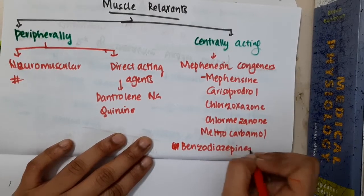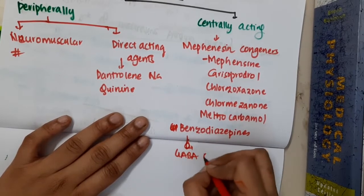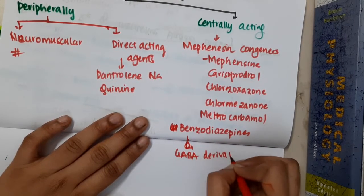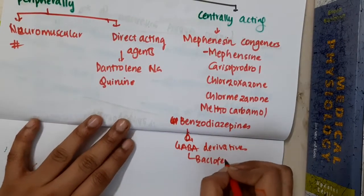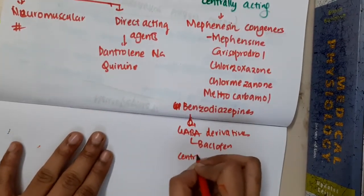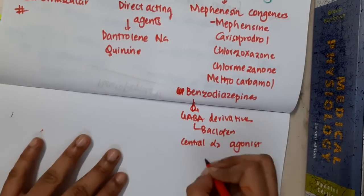Then we have GABA derivatives. GABA derivatives which are centrally acting muscle relaxants include baclofen. Then we have central alpha-2 agonists, which are also centrally acting muscle relaxants.